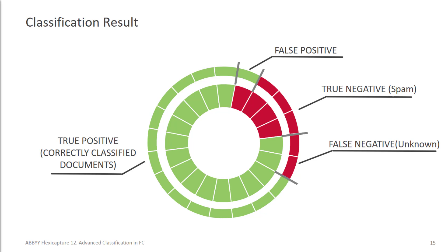We have true positive results — documents that have reference class A and result class A. We have false positive results — documents that didn't have a reference class, in other words unknown documents, and yet resulted in the assignment of class A. True negative results are documents that didn't have a reference class and stayed unknown after classification. And false negatives are documents that had the reference class assignment but were not classified as A and stayed unknown.